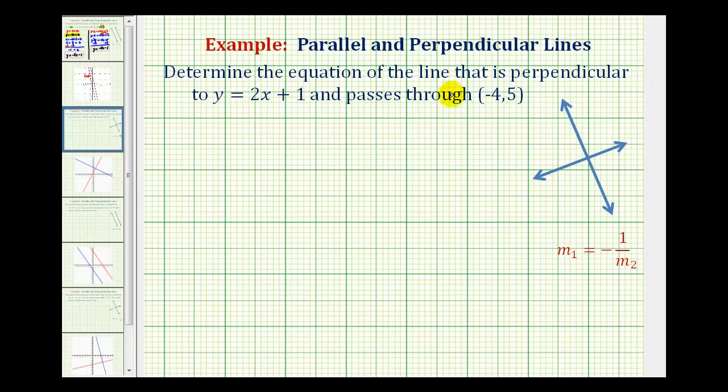We want to determine the equation of a line that is perpendicular to y equals 2x plus 1 and passes through the point with coordinates negative 4, 5.